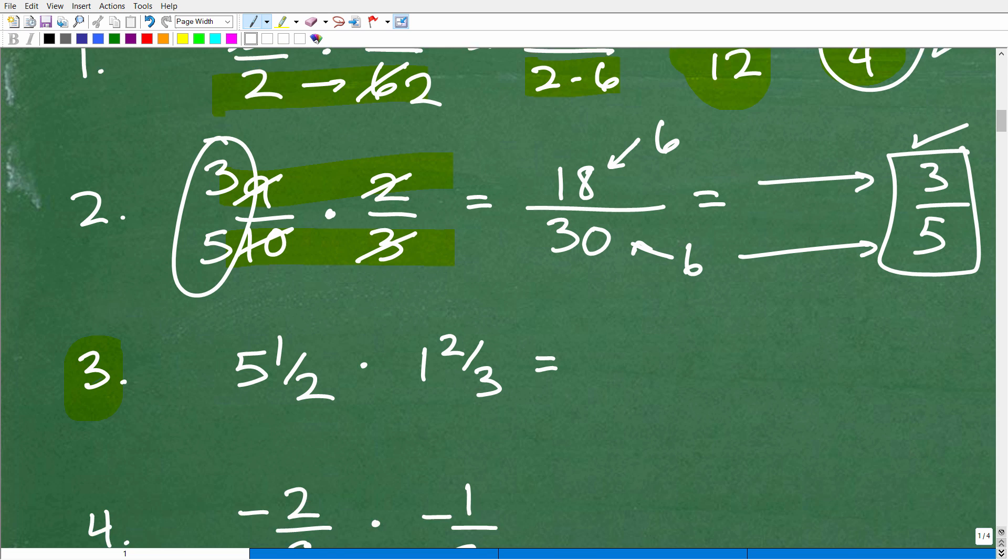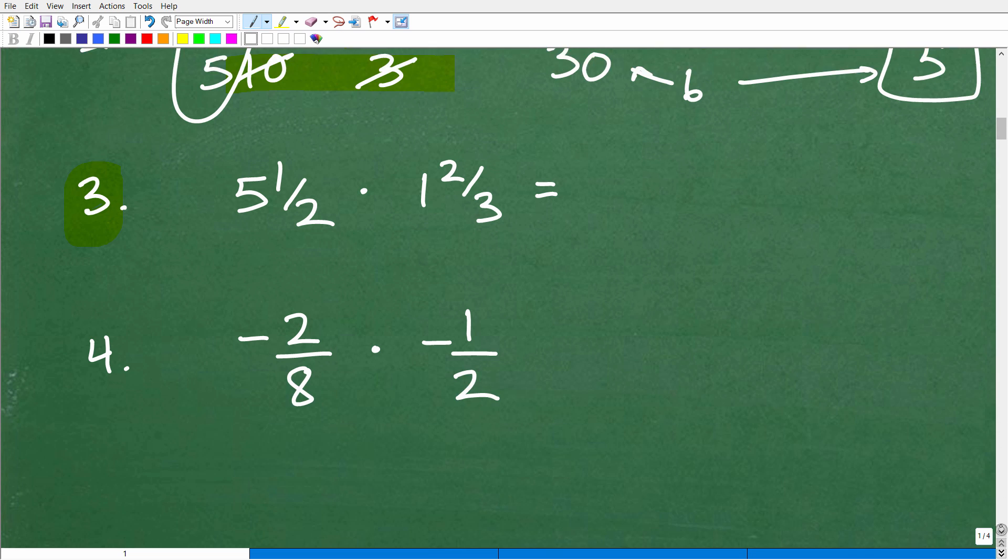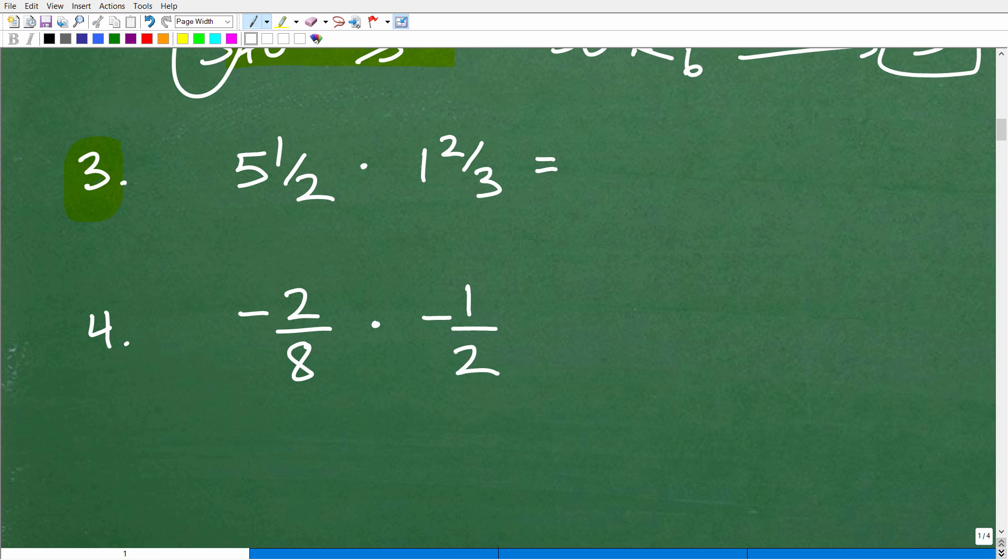Okay, so let's move on to this third problem. And we'll deal with this fourth problem here in a second. So how do we multiply mixed number fractions? Okay, so we have five and one-half times one and two-thirds.